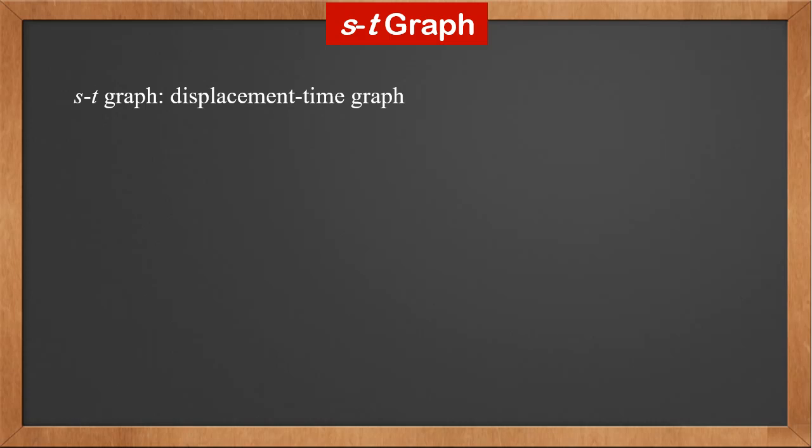The first kind of graph is the ST graph, which is a displacement-time graph. The horizontal axis is time and the vertical axis is displacement. The graph captures the change of displacement with time. Let's look at an example.